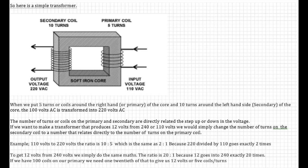The number of coils or turns on the primary and secondary coils are directly related to the stepping up or stepping down of the voltage. If we want to make a transformer which produces 12 volts from 240 or 110, we would simply change the number of turns on the secondary coil to the number that relates directly to the turns on the primary coil. Let's give you an example: 110 volts to 220 volts.